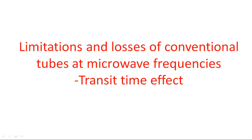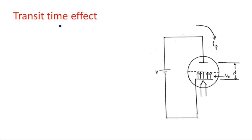In this video, we will explain the transit time effect as a limitation and loss of conventional tubes at microwave frequencies. Transit time is the time taken by the electron to travel from one electrode to another — from cathode to anode. The figure shows the electron gun: when energized, the electron travels from one plate to the other over a distance d with velocity v₀.